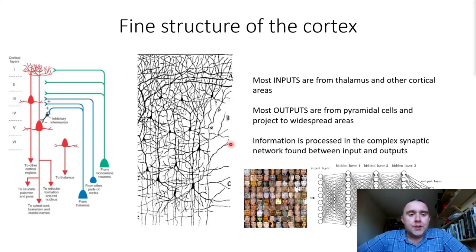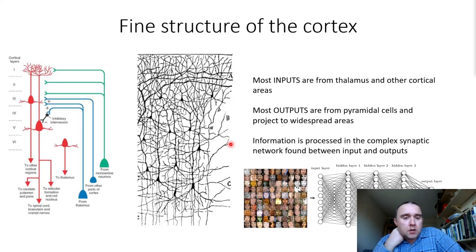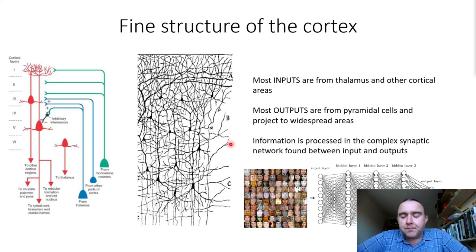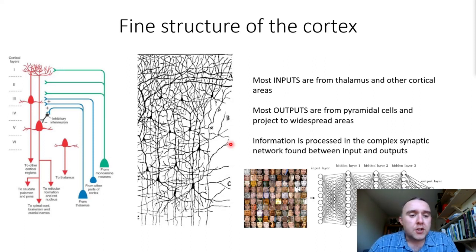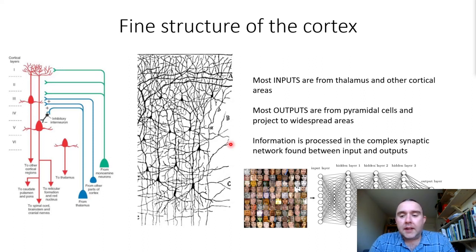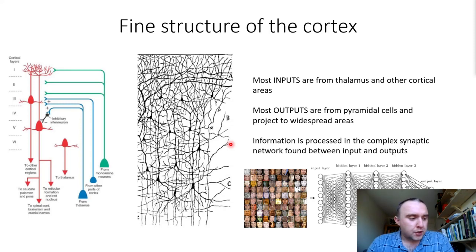We're going to take a look at the cerebral cortex. We're going to start off by considering its fine structure, then we're going to take a look at the idea of functional localisation within the cortex, before looking at each individual lobe and thinking about the individual functions of the various lobes of the brain.